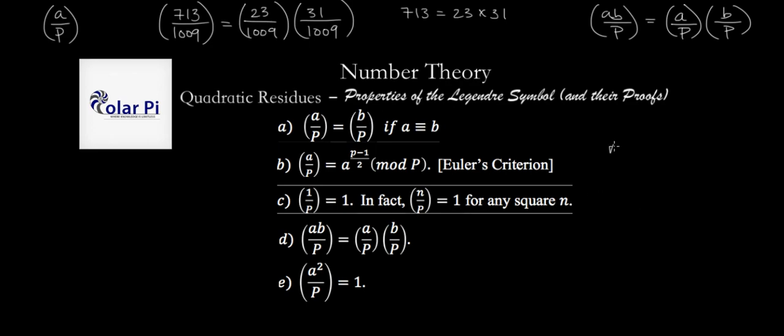So suppose that N is a square. So N is equal to X squared for some integer X, right? All right. So then we'll have, by part B, we'll have that X squared over P is equal to X squared to the power of P minus one over two.